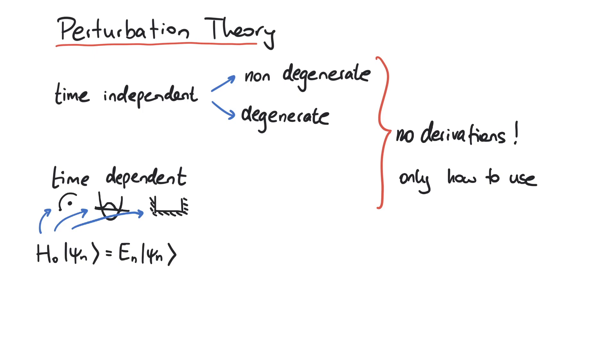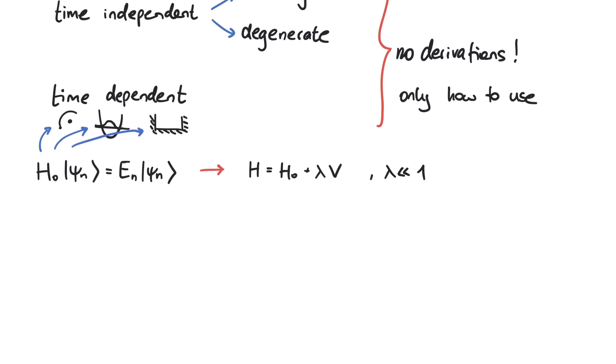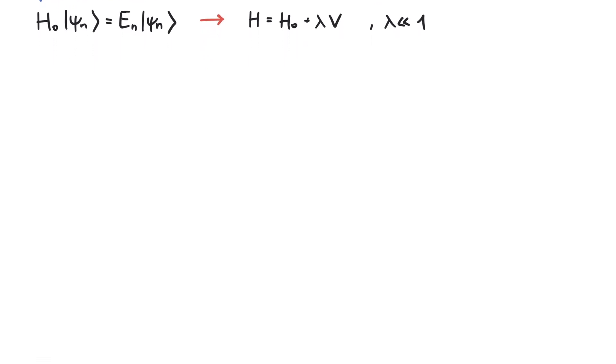To this unperturbed Hamiltonian, we add a potential. This potential usually comes with a parameter lambda, which is taken to be much smaller than 1. This means that the new potential only slightly alters our previous Hamiltonian, and that we can start to apply perturbation theory.